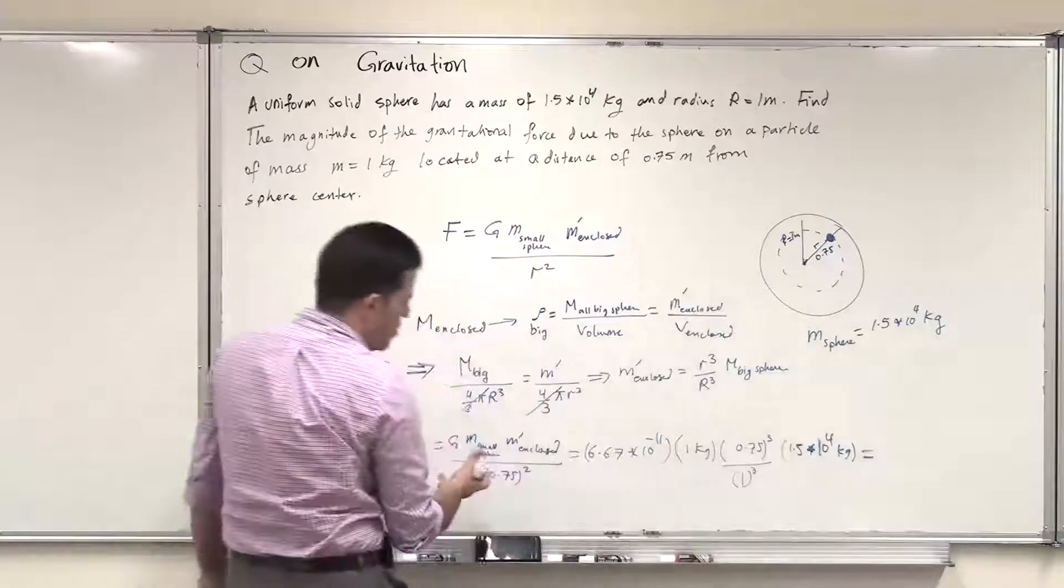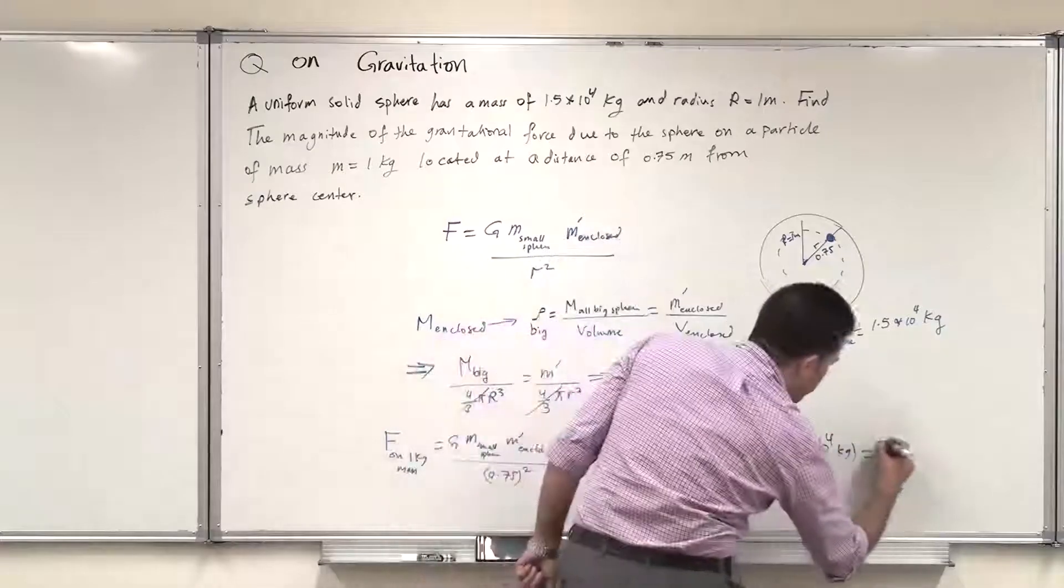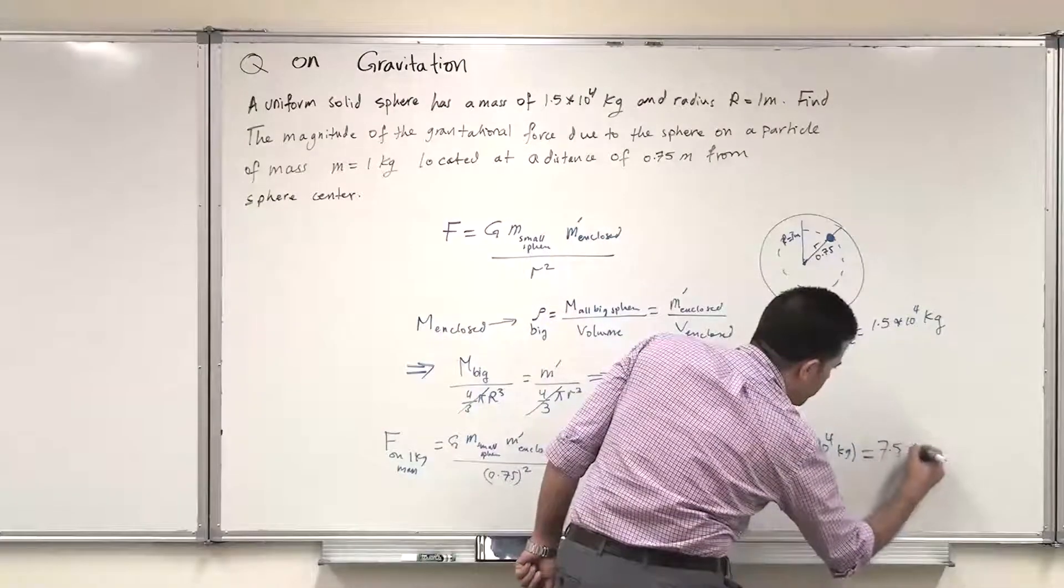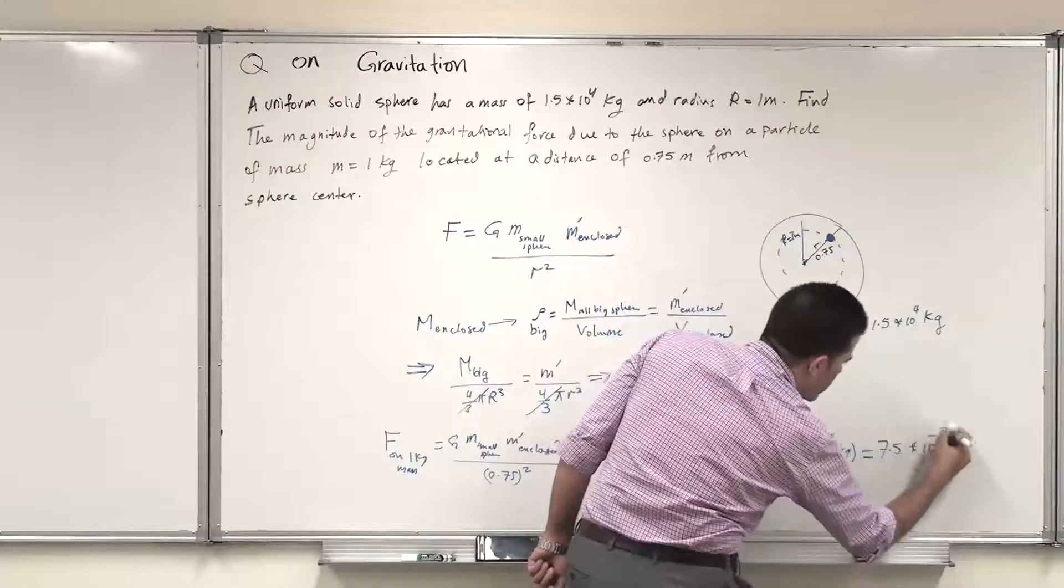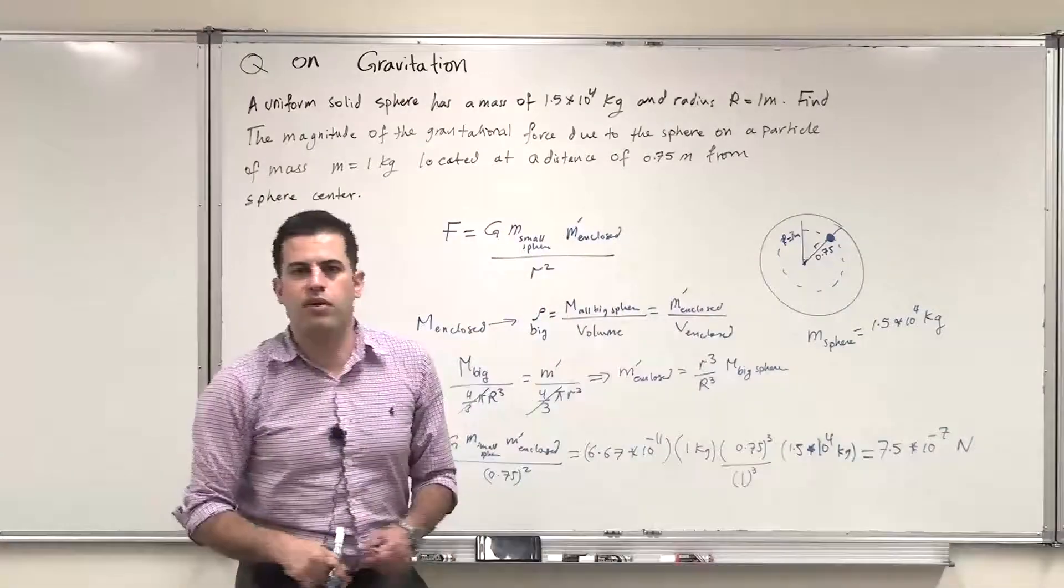And if you multiply all these numbers, you get 7.5×10^-7 newtons. Thank you.